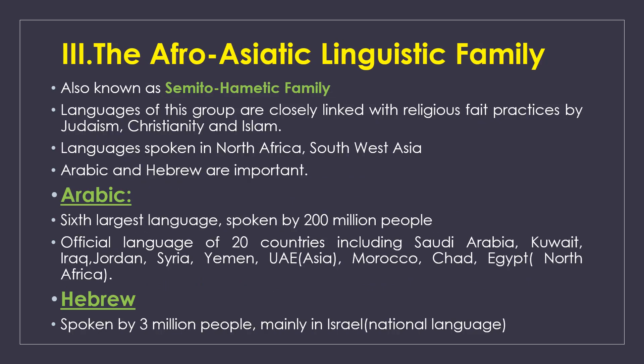The Afro-Asiatic linguistic family, also called the Semito-Hamitic family, is linked to the religions of Judaism, Christianity, and Islam. It is spoken in South West Asia and North Africa. The primary languages are Arabic and Hebrew. Arabic is one of the most widely spoken languages with around 200 million speakers and is an official language in countries including Saudi Arabia, Kuwait, Jordan, Syria, Yemen, UAE, Morocco, and Egypt.